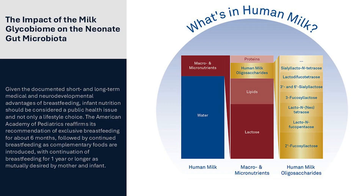Once you control the bacteria, you control the environment. The human gut microbiome is established at birth, ideally via vaginal delivery and followed by exclusive breastfeeding. As shown here, water is the largest single component of breast milk, but among the solid components, the third largest is human milk oligosaccharides — even higher than protein.